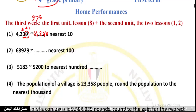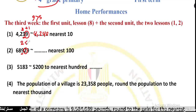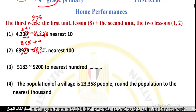Now round this number to the nearest hundred. We look at the hundreds place and circle the next digit. The next digit 2 is less than 5, so I will add nothing. The answer is 4,200.